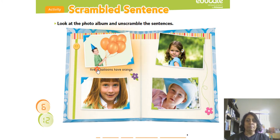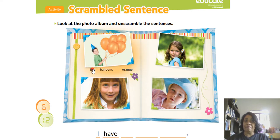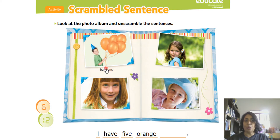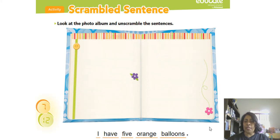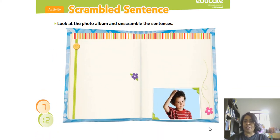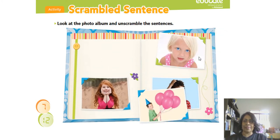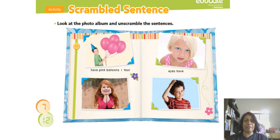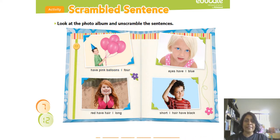I have five orange balloons. I have four pink balloons. A gente não passa cor pro plural em inglês. I have long red hair. E o boy: I have short black hair. E a menina linda tem olhos maravilhosos: I have blue eyes. Eu tenho olhos azuis.